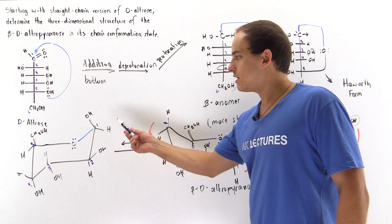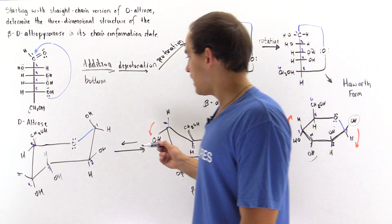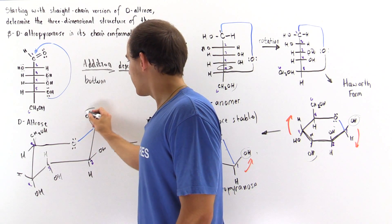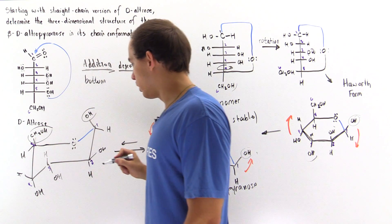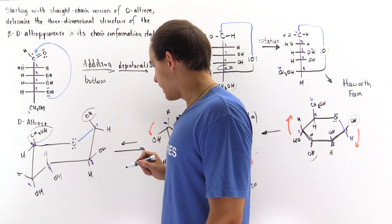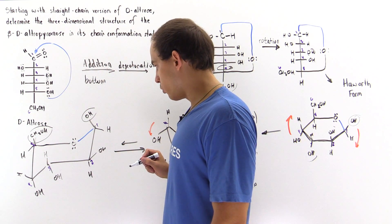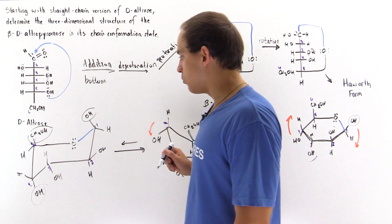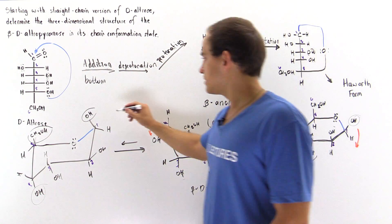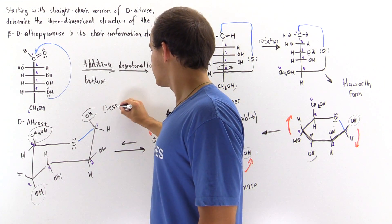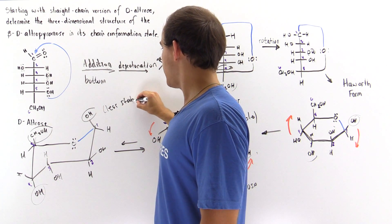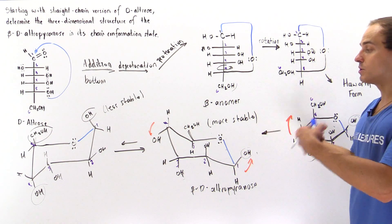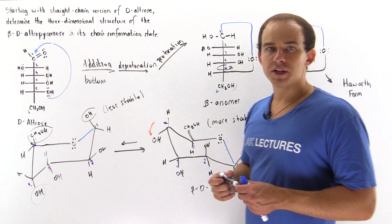In the less stable chair conformation, we have three groups pointing along the axial direction and only two pointing along the equatorial. This confirms this is the less stable chair conformation, while the previous one is the more stable chair conformation that will predominate at equilibrium.